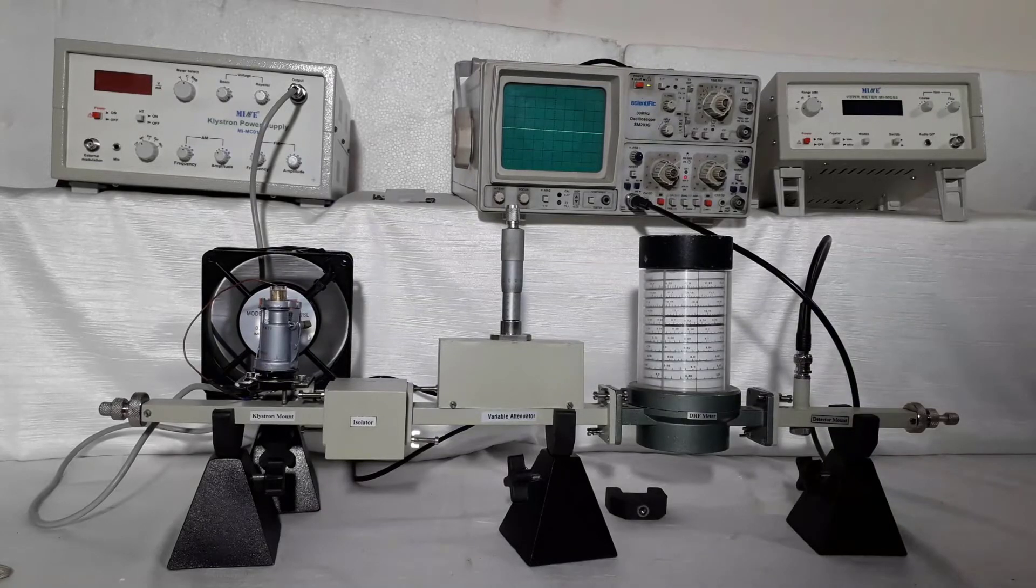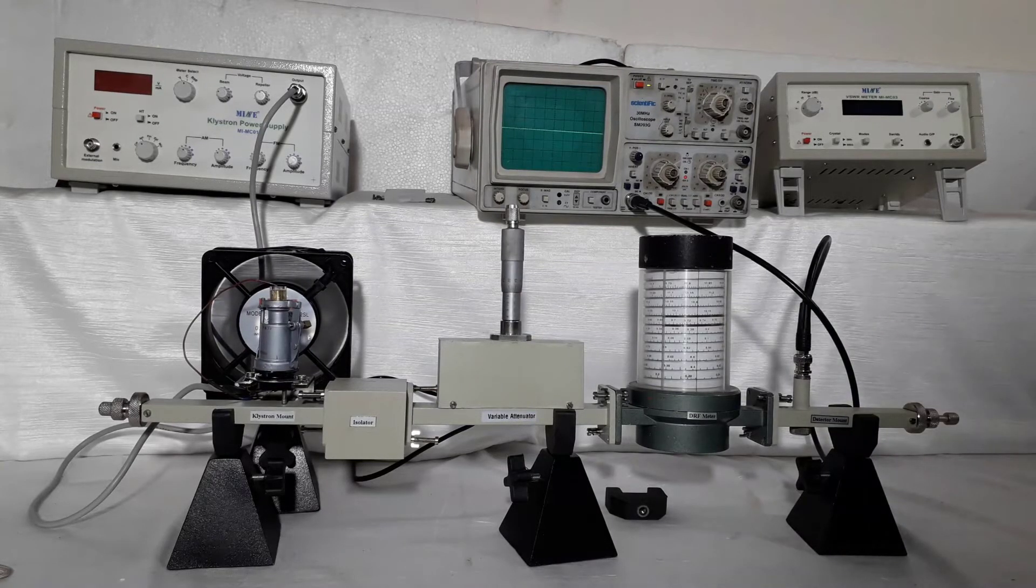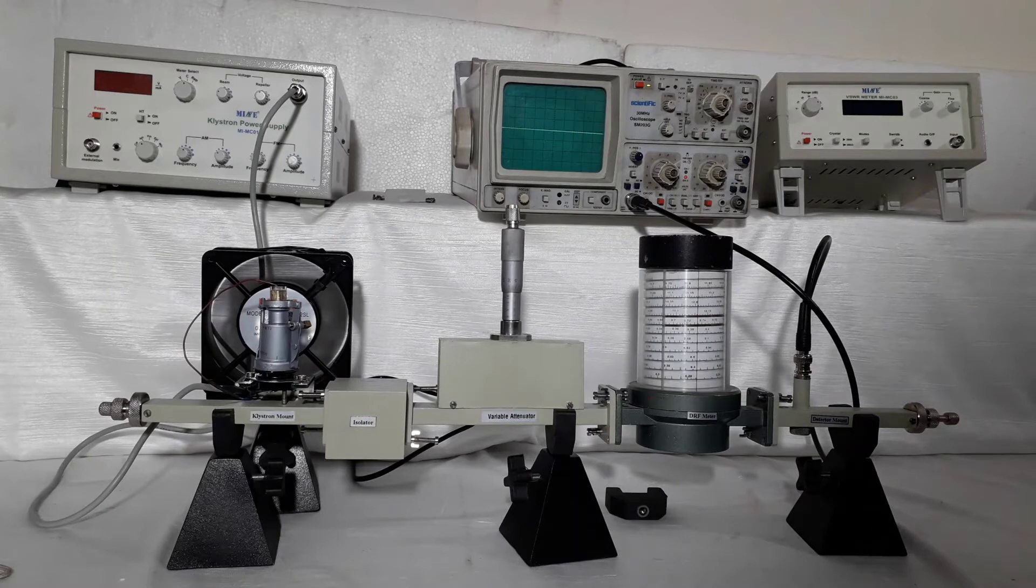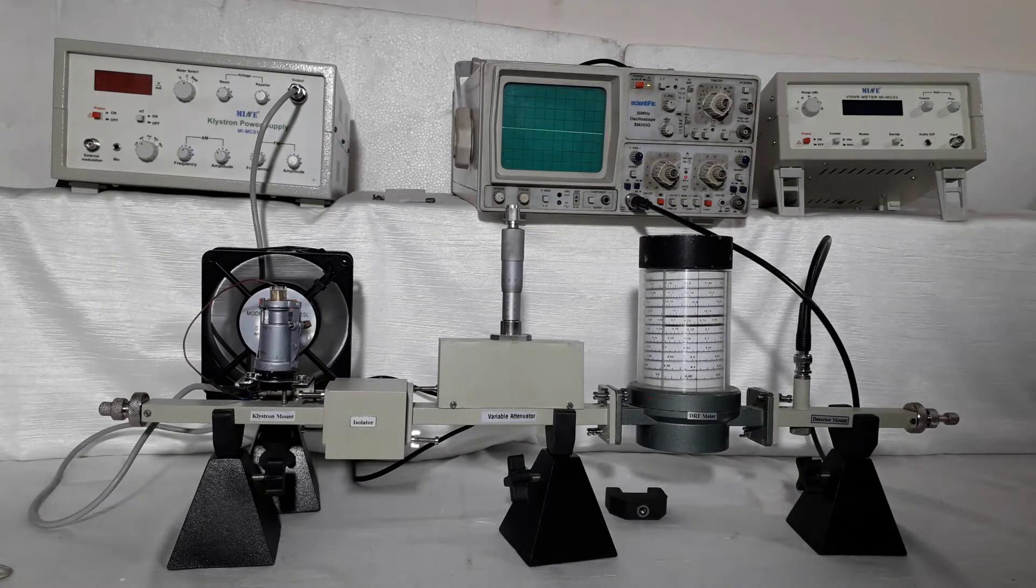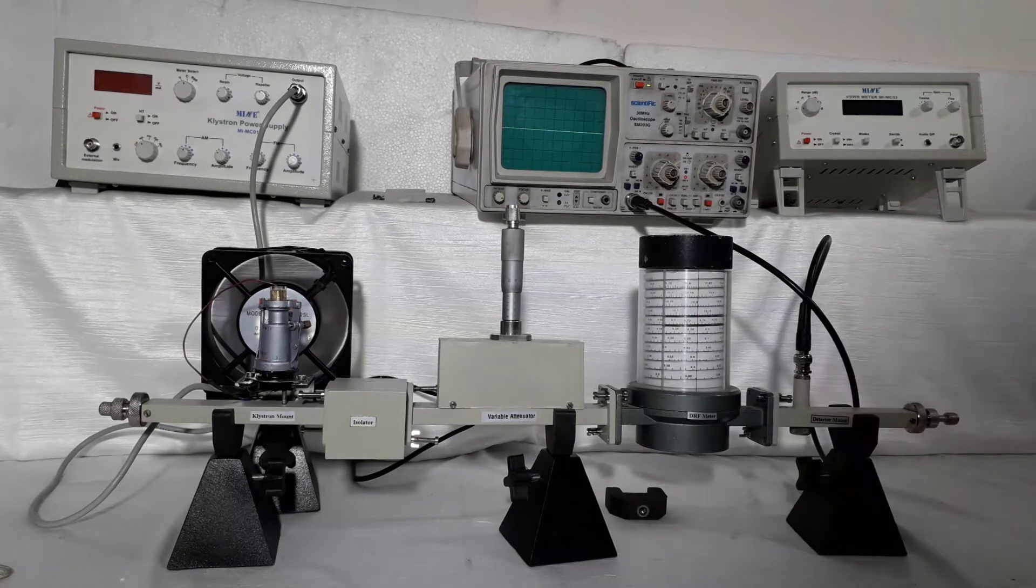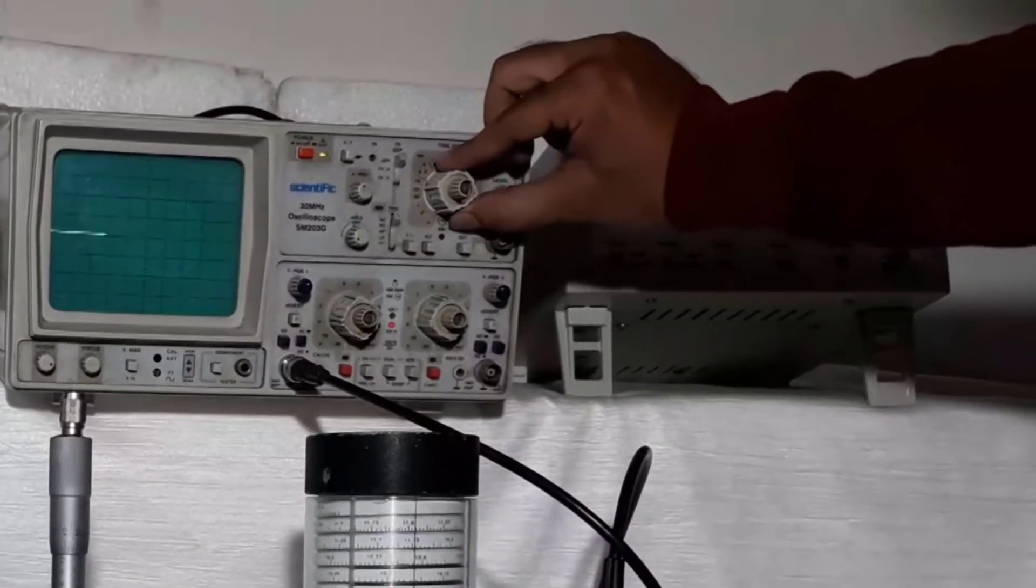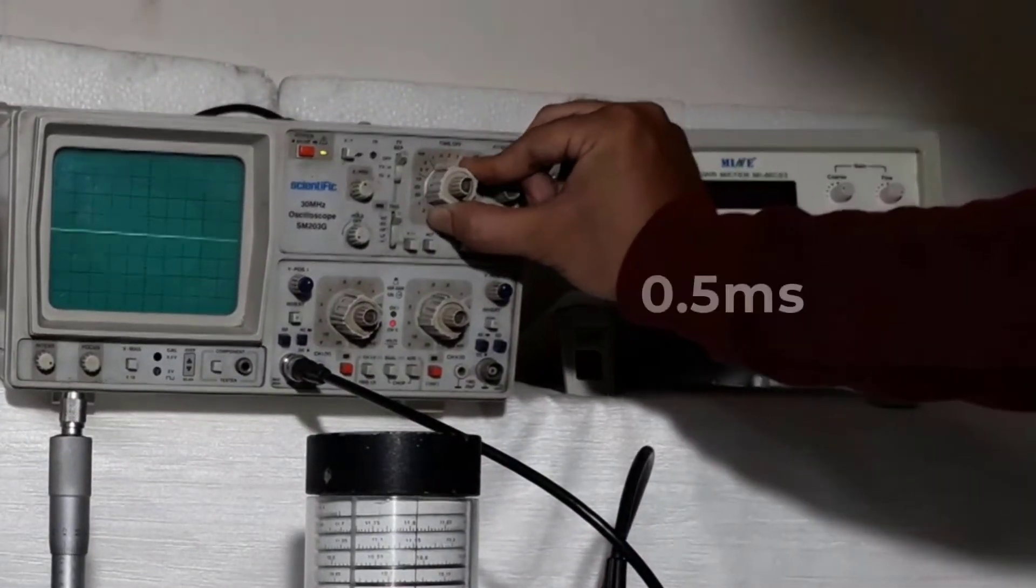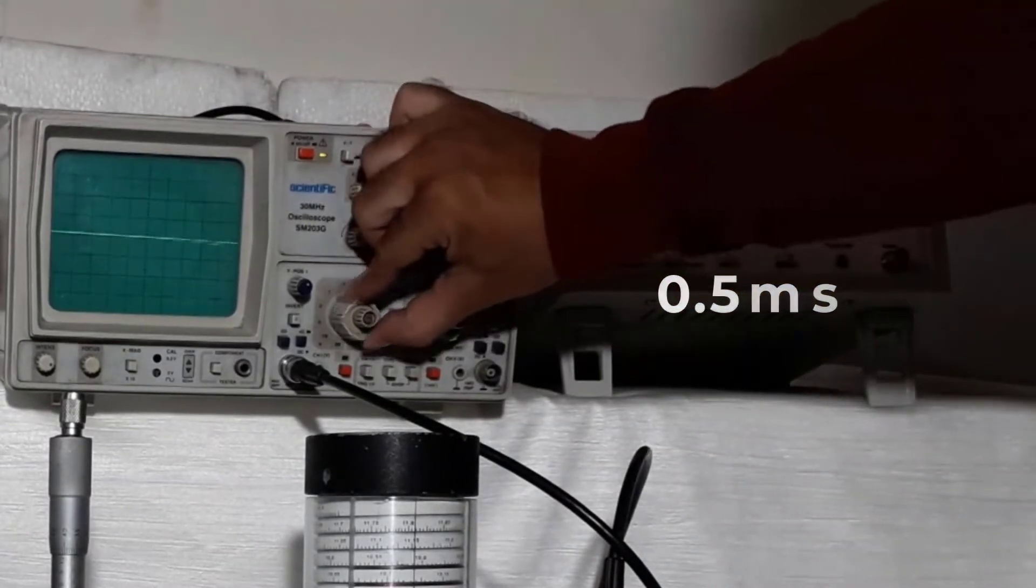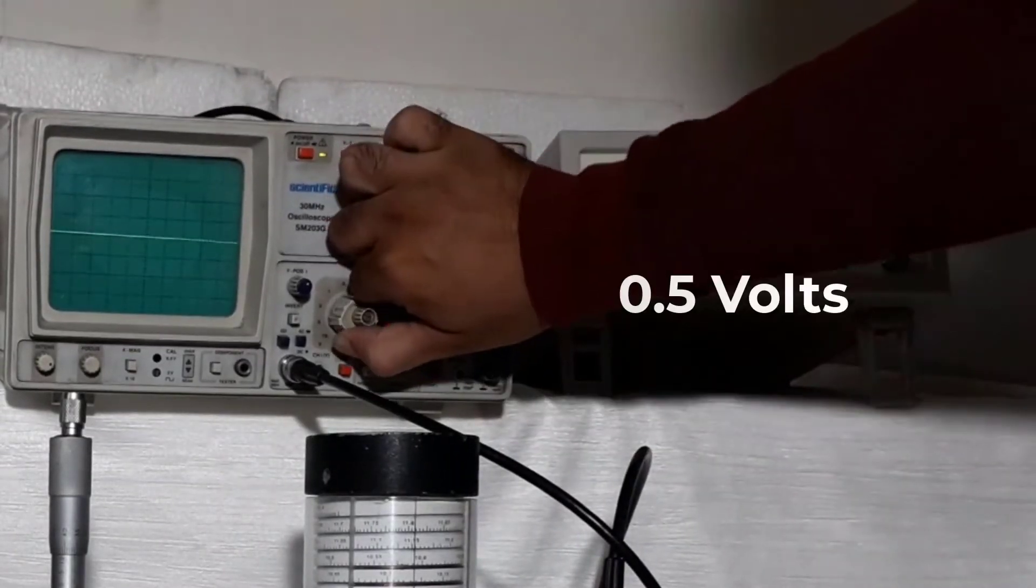Start experiment. Initially we will have to get square waveform output on CRO. Doing this, first set all instruments knobs as given in manual. At CRO time base for 0.5 ms and amplitude base for 0.5 volts.